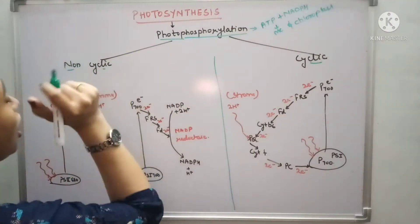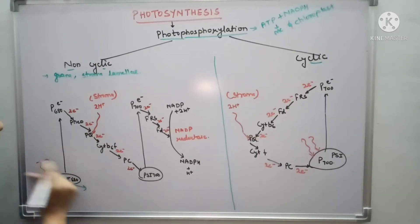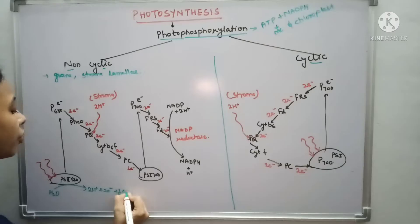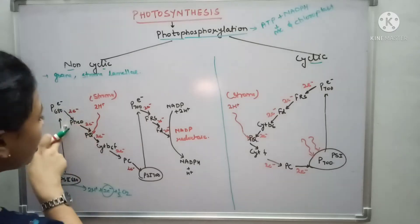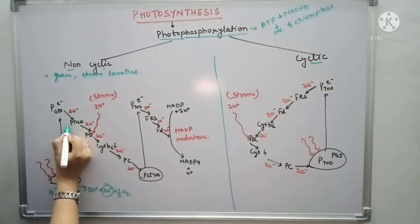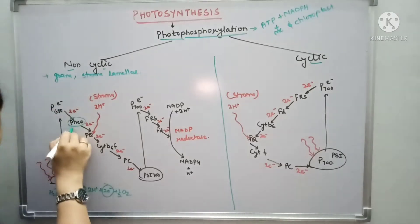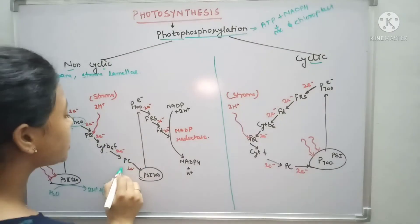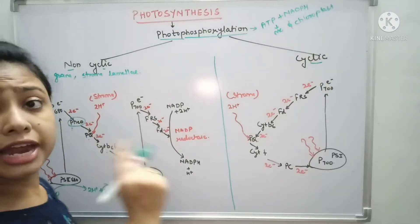In non-cyclic photophosphorylation, Photosystem II takes energy from the sun and also takes electrons from the splitting of water. The electron gets excited and is released to the electron transport system. The first electron acceptor in non-cyclic photophosphorylation is pheophytin, then it goes to plastoquinone, cytochrome b6f, then plastocyanin.